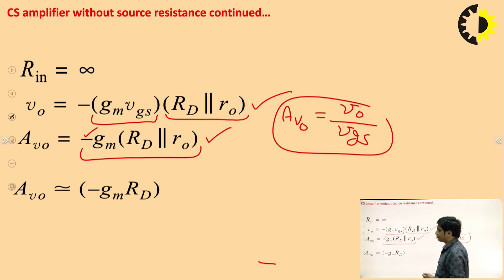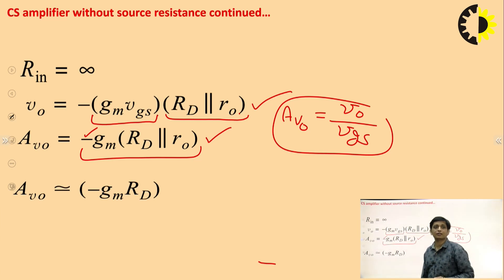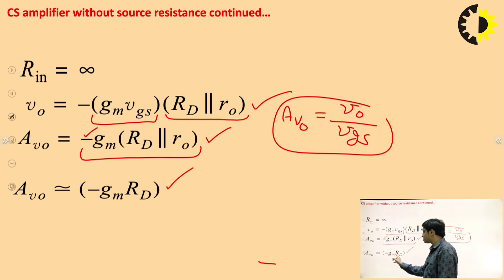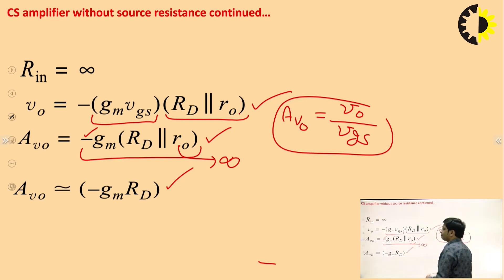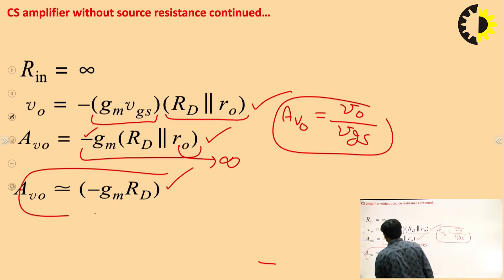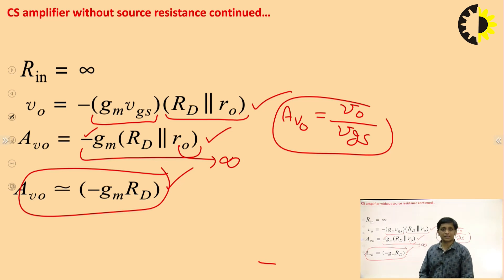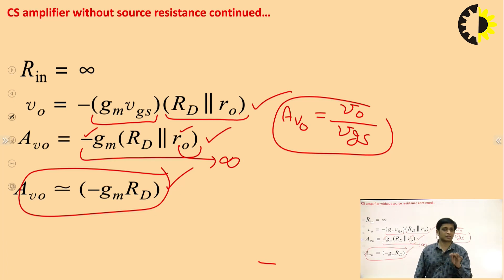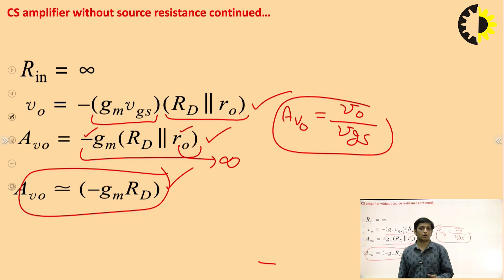In the voltage gain expression, R0 appears because we considered the channel length modulation effect. If we neglect channel length modulation (Early effect), R0 is removed, and the gain becomes −gm × Rd — because R0 becomes infinite, and Rd || ∞ = Rd. In discrete circuit amplifiers, the role of R0 is very small, so sometimes we ignore it. But in IC amplifiers, we do not ignore R0 because it has a major impact on amplifier performance.